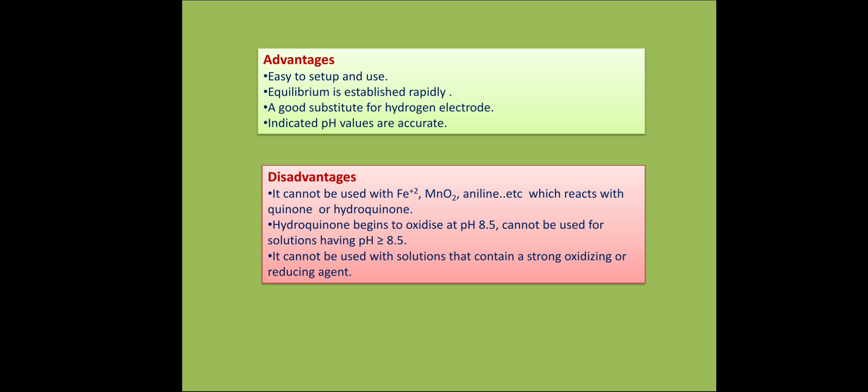There are also some disadvantages. This electrode cannot be used in solutions containing ferrous ions, manganese dioxide, or aniline, which can react with quinone or hydroquinone. Also, it cannot be used in highly alkaline solutions where hydroquinone begins to oxidize at pH 8.5 and above. It also cannot be used in solutions containing strong oxidizing or reducing agents. This concludes how to determine the pH of a solution using the quinhydrone electrode.